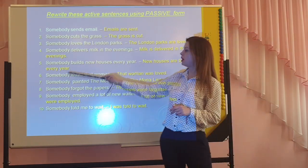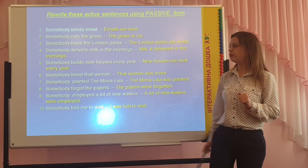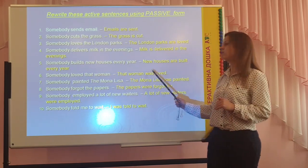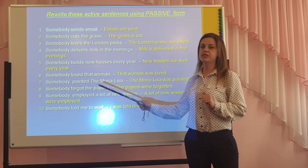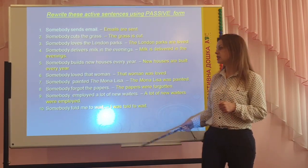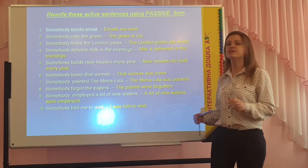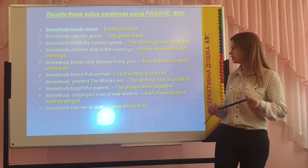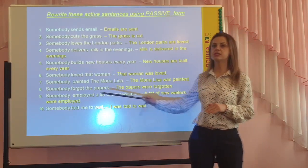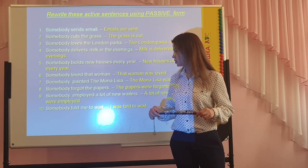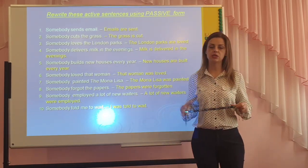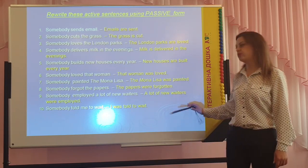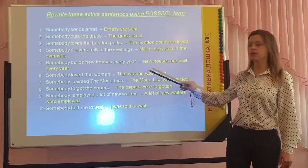In the next exercise we use the past simple passive. Somebody loved that woman → That woman was loved. Somebody painted the Mona Lisa → The Mona Lisa was painted. Somebody forgot the papers → The papers were forgotten. Somebody employed a lot of new waiters → A lot of new waiters were employed. Somebody told me to wait → I was told to wait. In this part we use only the past simple passive form, using the helping verb 'was' or 'were'.